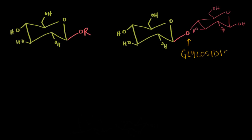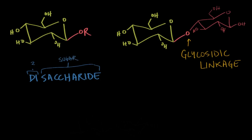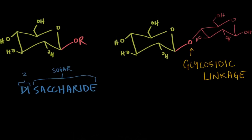When two monosaccharides are linked together by glycosidic linkages, we call the product a disaccharide. 'Di' means two, and 'saccharide' means sugar — so a disaccharide is simply two monosaccharides linked together.